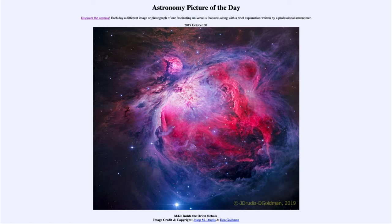The Orion Nebula is also visible to the naked eye. You certainly won't get this kind of view, but you can see a fuzzy patch in the constellation of Orion. Find the three stars in Orion's Belt, then look hanging down from those in Orion's Sword — you would see a fuzzier area looking kind of like a star but a little bit fuzzier, and that would actually be the Orion Nebula. If you could zoom in and take a nice image, you would see something like our image for today.